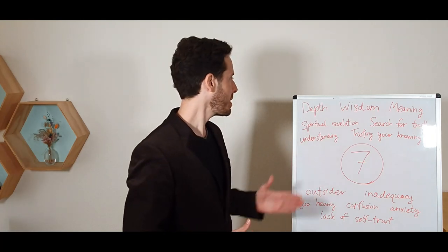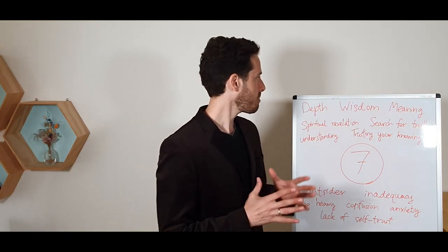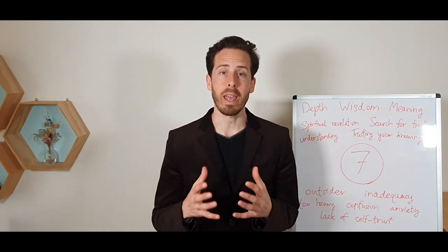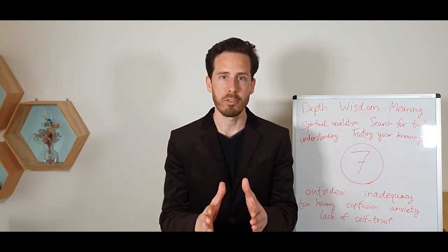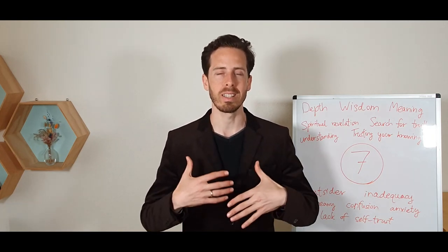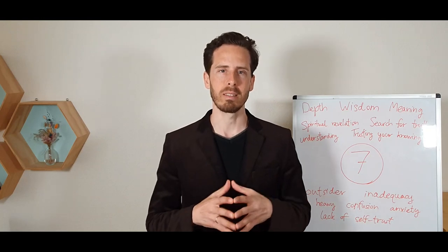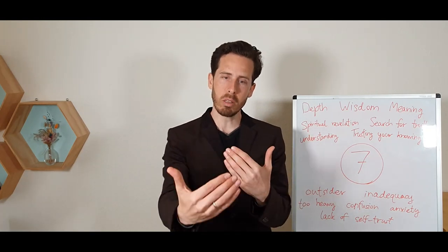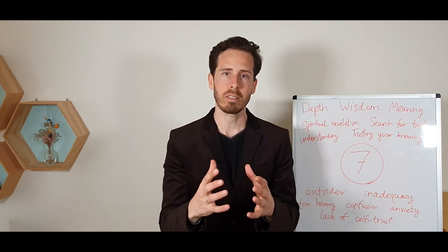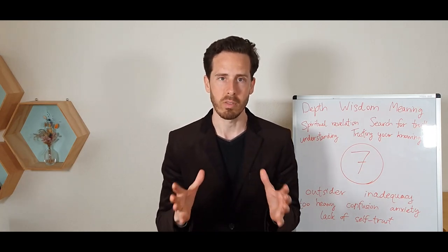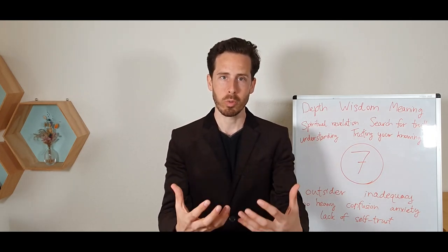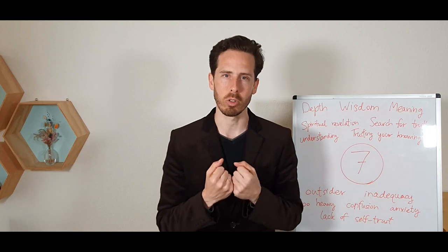So life path number seven deals with the subjects of depth, wisdom, meaning, and the search after truth. As a seven life path, these are the qualities that you are meant to embody. To embody that depth, that looking beyond the surface, beyond the appearance of things. Not just taking things at face value, but actually looking deep in order to find the root truth of things, the original truth.